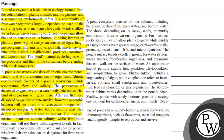For instance, marine organisms tolerate salinity while freshwater organisms will not thrive when exposed to salt. In fact, freshwater ecosystems often have plant species present which will absorb salts that are dangerous for freshwater organisms. A pond ecosystem consists of four habitats including the shore, surface film, open water and bottom water.